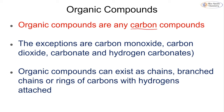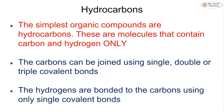At GCSE we will cover alkanes and alkenes in more detail later in this course. Organic compounds can exist as long chains with all their carbons in a row, as branched chains with extra parts coming off the side, or as a ring of carbons, and they will generally have hydrogens attached as well.